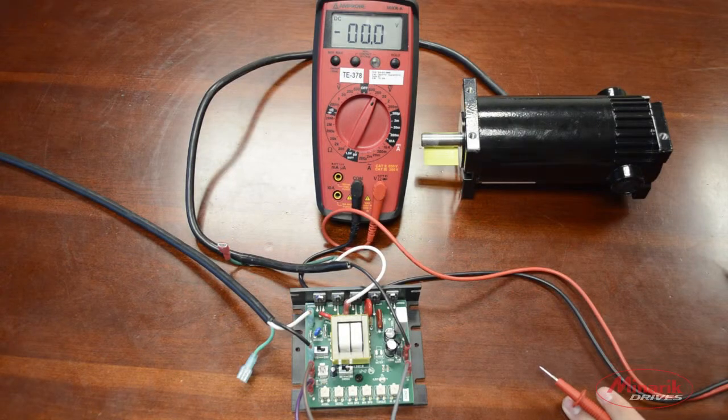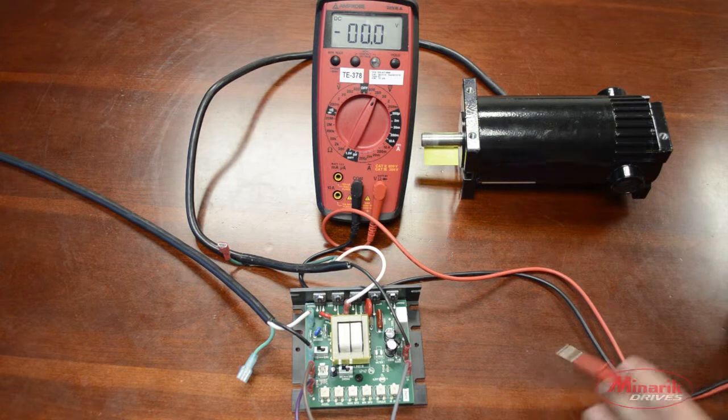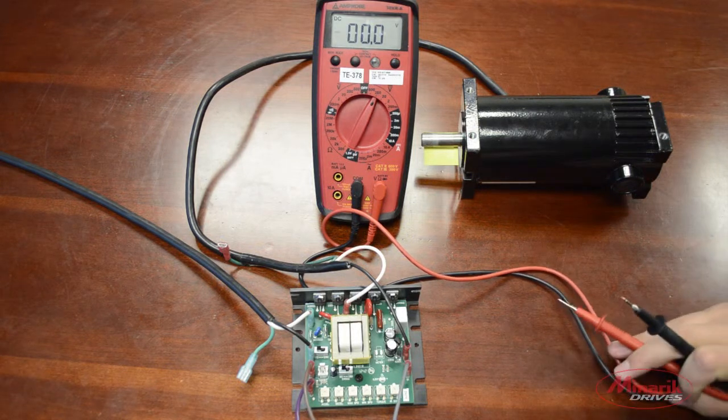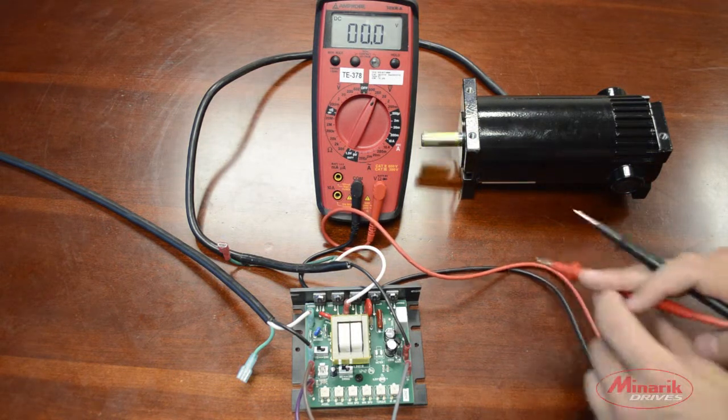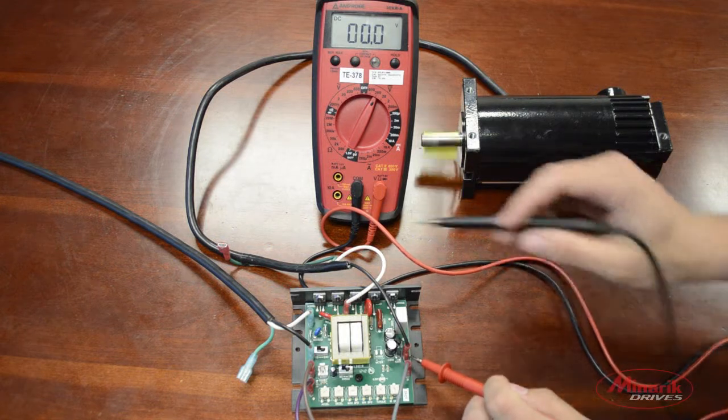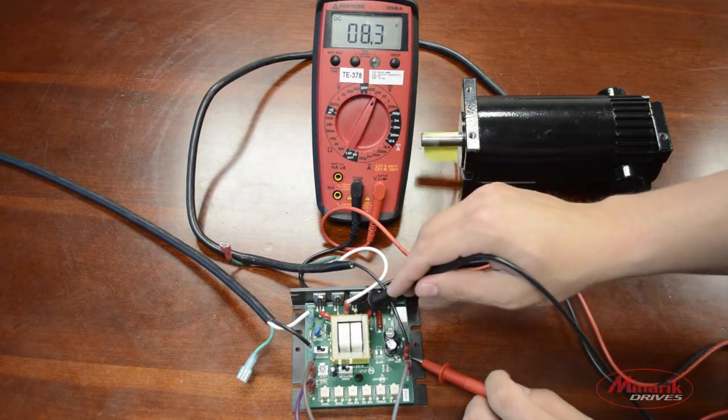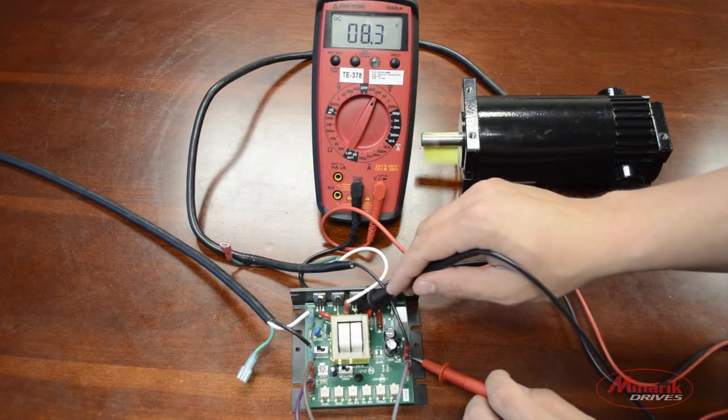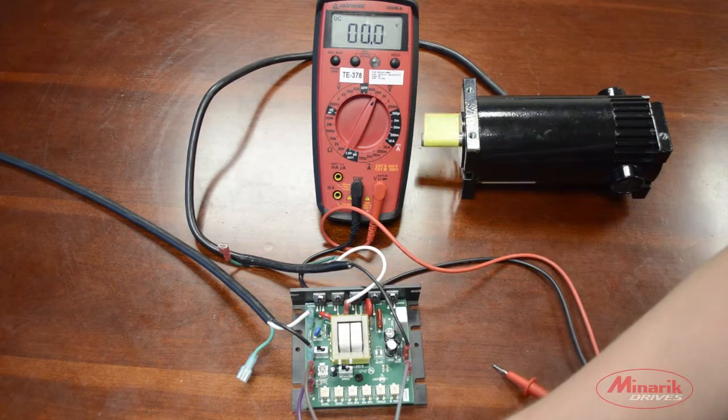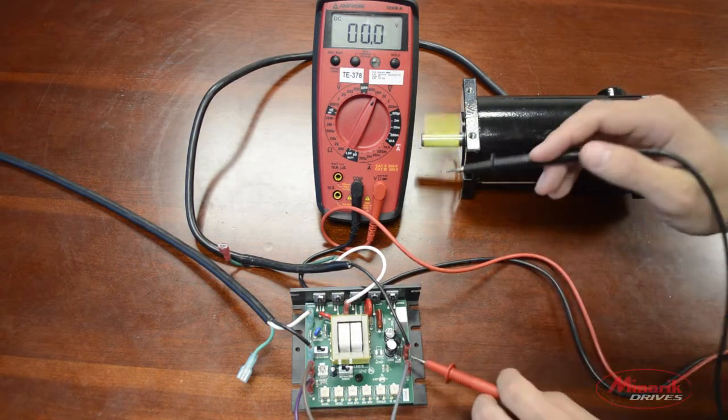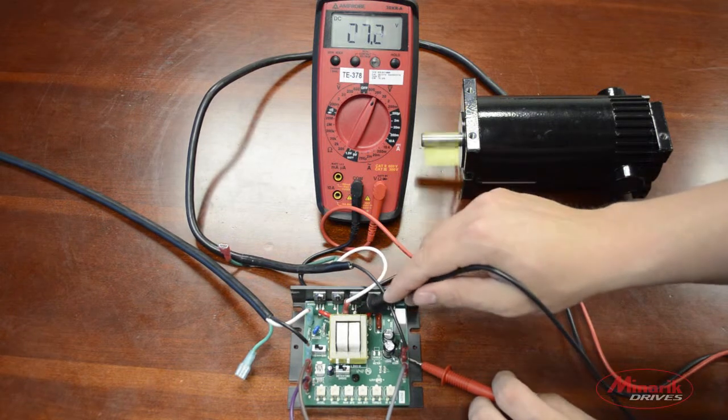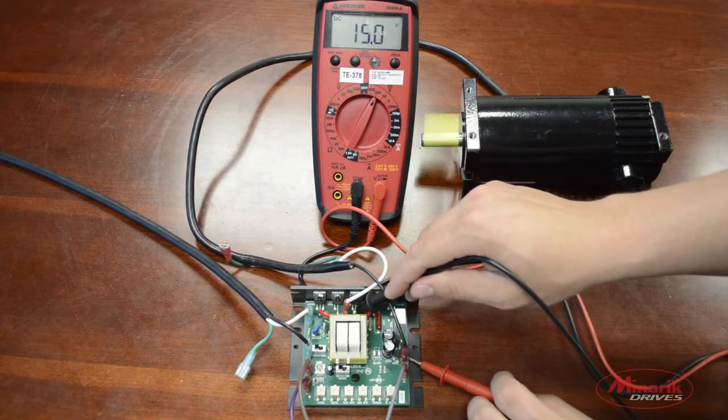The next step is to make sure the drive is outputting a voltage to A1 and A2. To do this, you can adjust the trim pot and measure across A1 and A2. This will be a DC voltage. As you can see, we are getting 8 volts. If we increase the trim pot, the voltage should also increase.